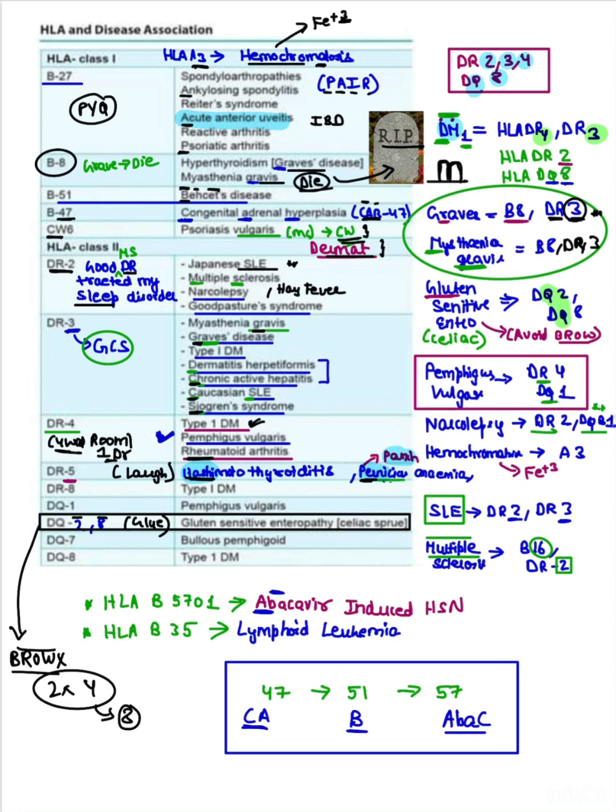That is DR2, 3, 4, and DQ8. Now coming to Graves and myasthenia gravis: when someone dies, that is a tombstone, this 8 and 3 looks the same, that is B8 and DR3. Then gluten-sensitive enteropathy: you need to avoid BROW, and this you need to glue in your mind. Glue sticks two things together, that is 2 into 4 is 8: DQ2 and DQ8.